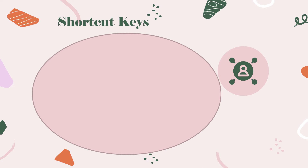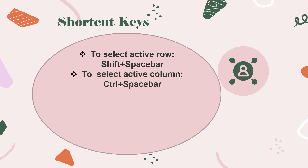Now let us quickly revise the shortcut keys which will help you to perform different actions on your spreadsheet. The first one is to select the active row — the shortcut key used is Shift + Space Bar. In order to select the active column — which means the column that is currently active or the one you are currently working in — the shortcut key is Ctrl + Space Bar.